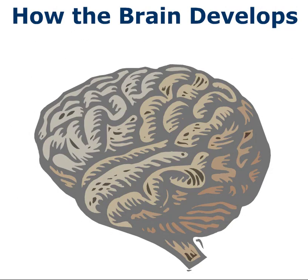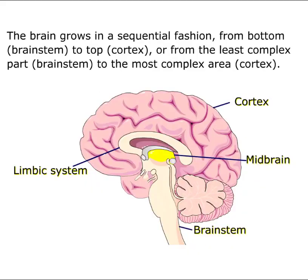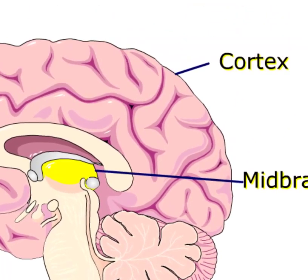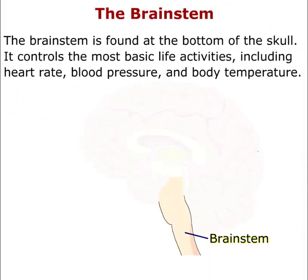This activity is a demonstration of how the brain develops. The brain grows in a sequential fashion from the bottom to the top — it grows from the least complex part, the brain stem, to the most complex area, the cortex.